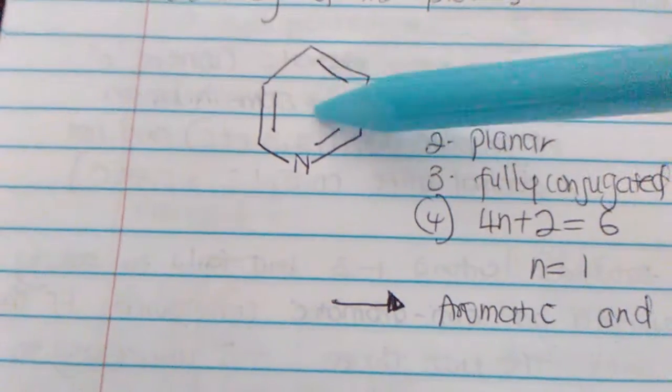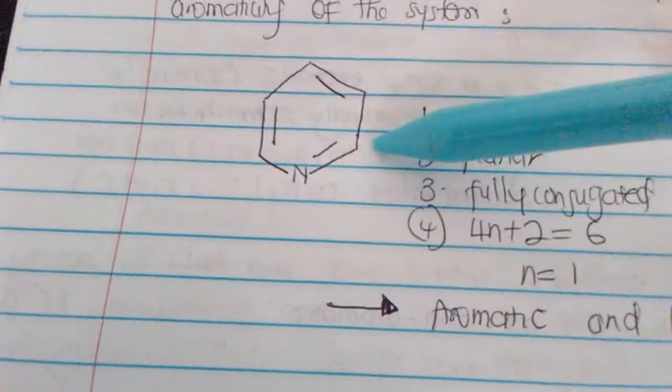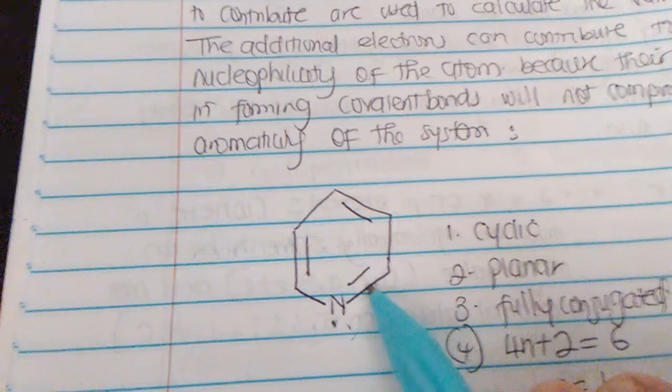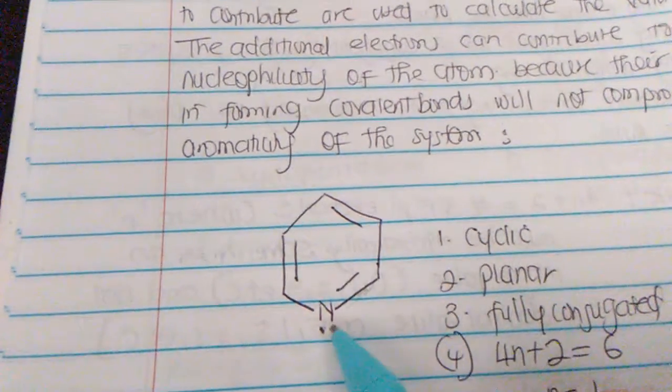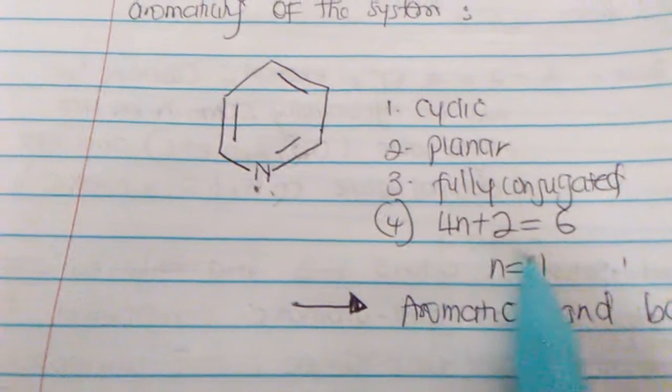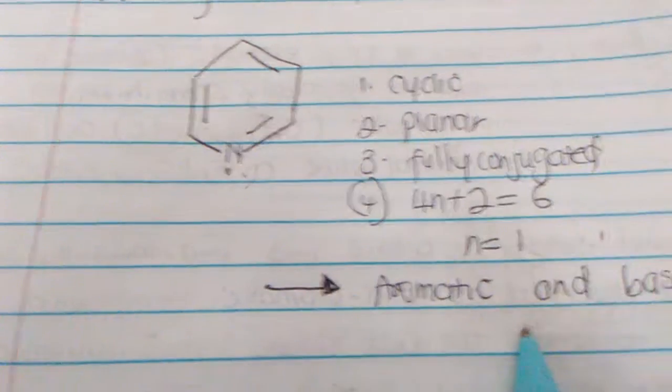Here's a second example. I have 1, 2, 3 pi electrons from double bonds. I wouldn't count the lone pairs shown next to the double bond — whenever you see a lone pair directly adjacent to a double bond, you don't count it. So you only count the double bond electrons: 2, 4, 6 — that's 6 electrons, which obeys the 4n + 2 rule, so it's aromatic.